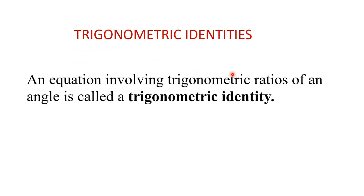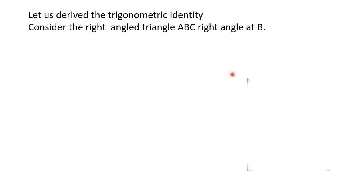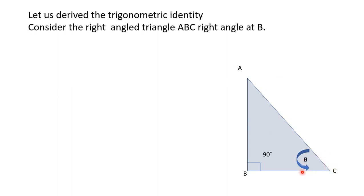The question arises: what is the relation between an identity and a trigonometric identity? An equation which has the trigonometric ratios of an angle is called a trigonometric identity. To understand how these identities are generated, let us consider a right-angle triangle ABC where angle B is 90°, and angles C and A are acute angles.